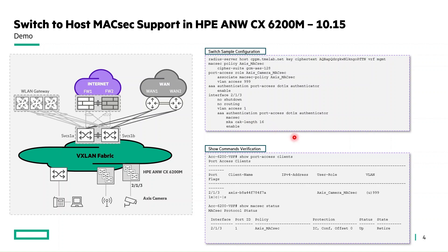With that configuration, we can see the access camera has been successfully onboarded — EAP-TLS authenticated successfully along with the MACsec role assignment. The MACsec status clearly shows as up.